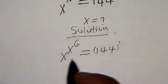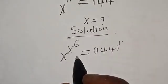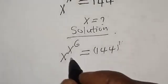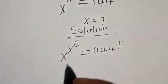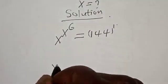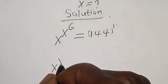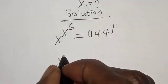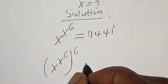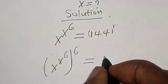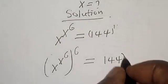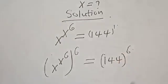Let's multiply the exponent of both sides by the power of 6. Then s raised to the power of x raised to the power of 6, all raised to the power of 6, is equal to 144 raised to the power of 6.